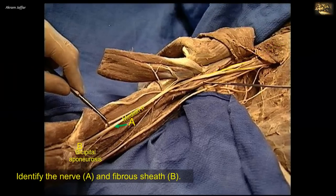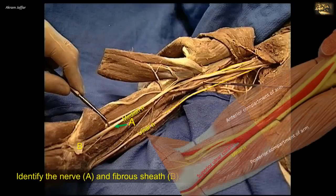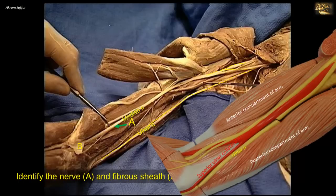Follow it distally and note that it enters the cubital fossa medial to the tendon of biceps muscle. Also note the ulnar nerve arising from the medial cord of the brachial plexus in the axilla. Here it is present in the arm, first in the flexor, and then in the extensor compartment of the arm, reaching behind the medial epicondyle of the humerus. Note that it is accompanied by the superior ulnar collateral artery, a branch of the brachial artery, which accompanies the ulnar nerve behind the medial epicondyle of the humerus. It participates in the anastomosis around the elbow joint.